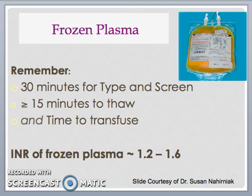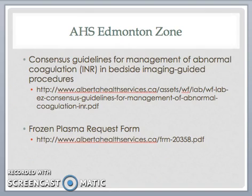Remember that to issue frozen plasma, the transfusion medicine service needs 30 minutes to complete the type and screen first, and then at least 15 minutes to thaw the plasma before issue. Plasma transfusion also needs time to infuse into the patient. Keep in mind the INR of frozen plasma is also not normal, ranging anywhere from 1.2 to about 1.6 or higher in some cases. You may refer to the Alberta Health Services Edmonton Zone Consensus Guidelines for Management of Abnormal Coagulation INR in Bedside Imaging Guided Procedures, and the frozen plasma request form is also available on the AHS website.